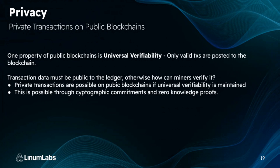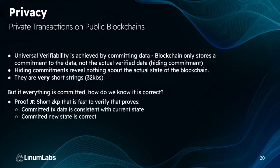Let's look at privacy and private transactions on public blockchains. A property of public blockchains is universal verifiability — only valid transactions are posted to the blockchain, and transaction data must be public to the ledger, otherwise how can transactions be verified? Private transactions are actually possible on public blockchains if we maintain universal verifiability, through cryptographic commitments and zero knowledge proofs. Universal verifiability is achieved by committing data — the blockchain stores a commitment to the data, not the actual verified data, using the hiding commitment property.